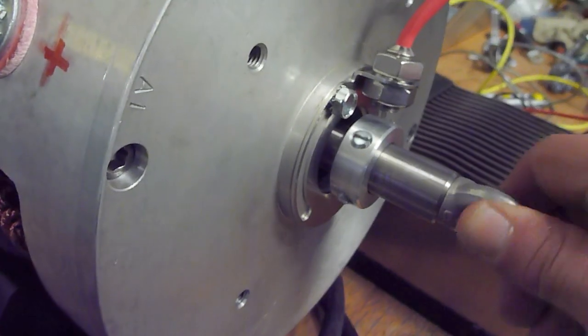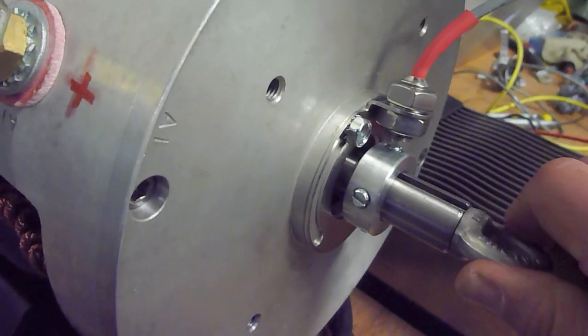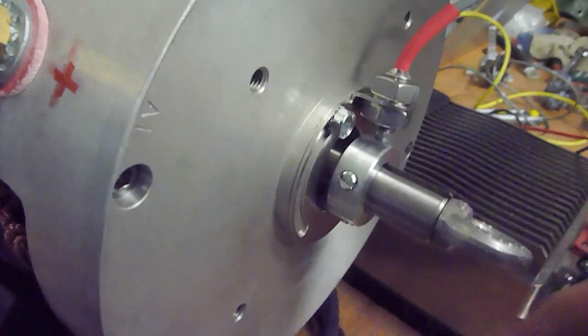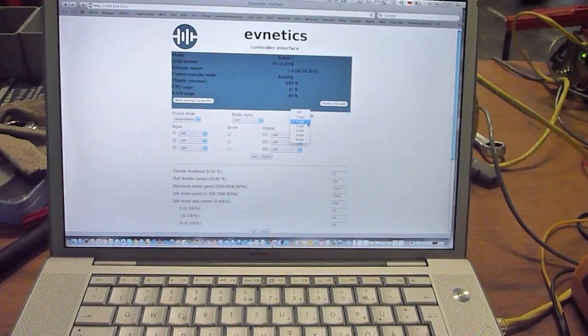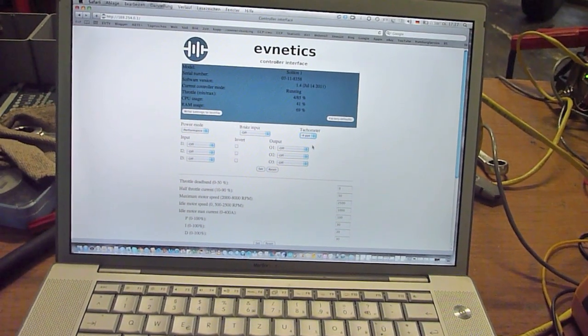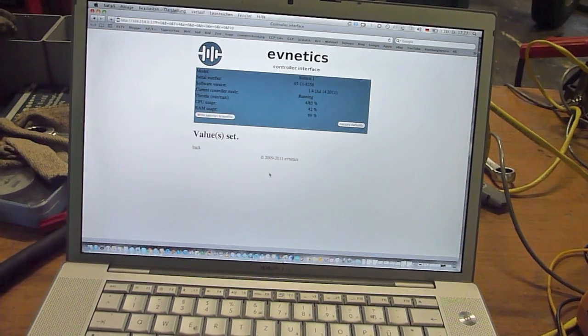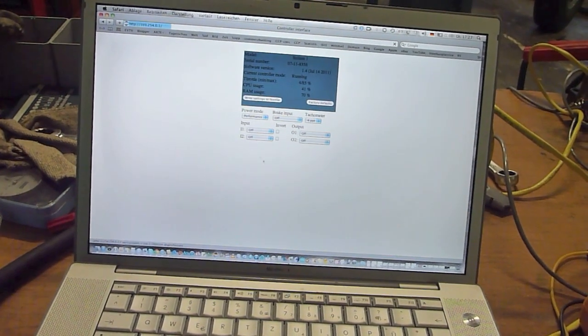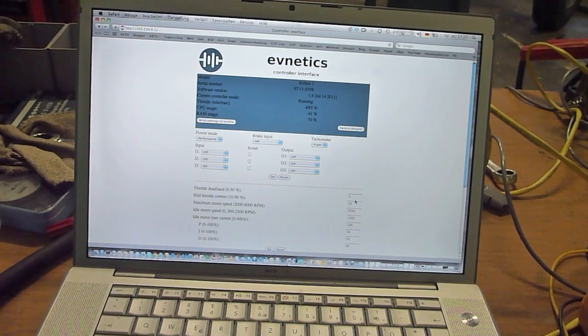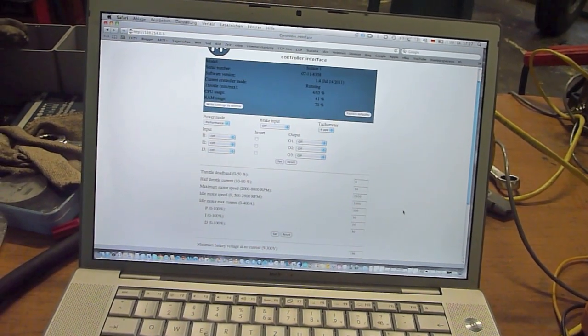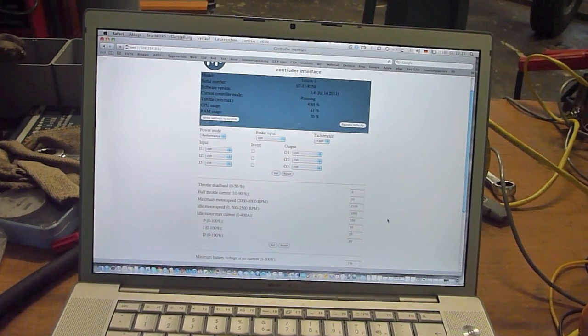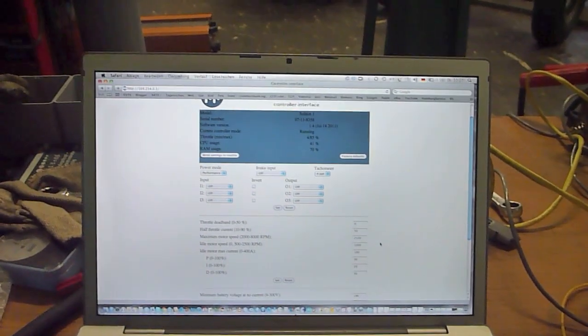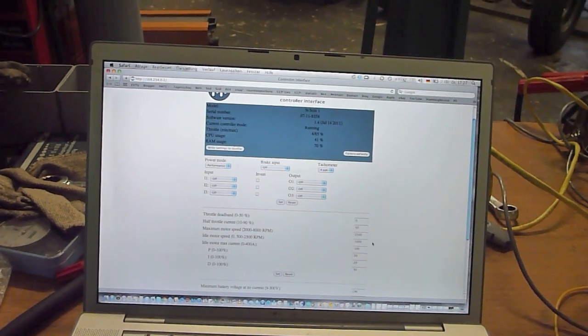Now I put in all the four pickup screws for the RPM sensor. And we will change this here on the tachometer set. Just to have an idea that this is working also. So we are on 2500 rpms maximum, 1000 idle speed.